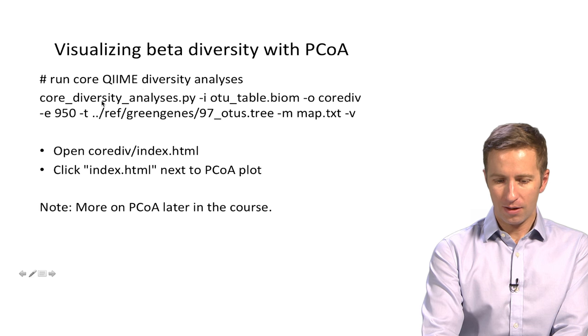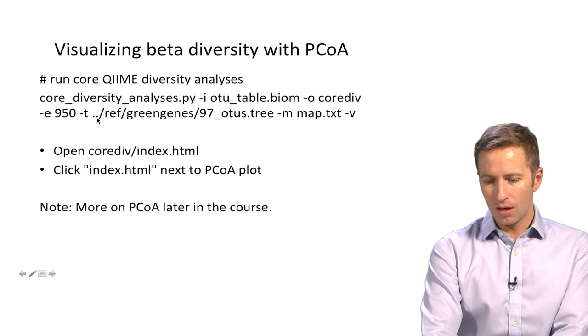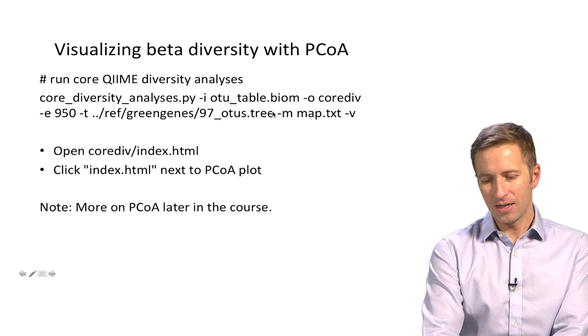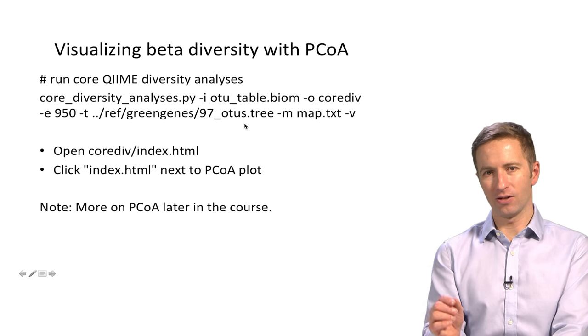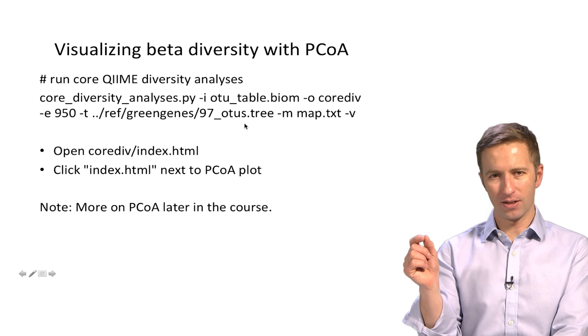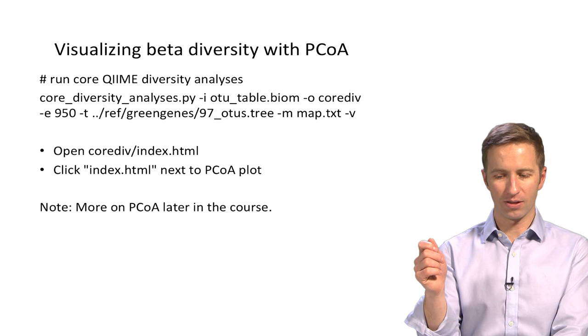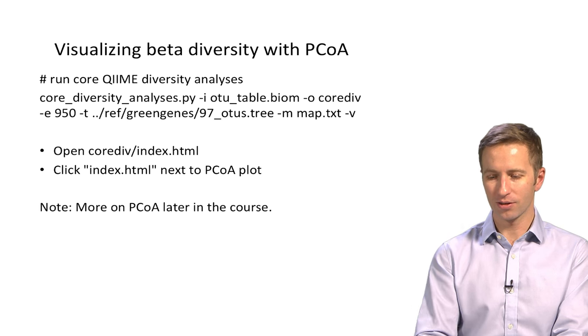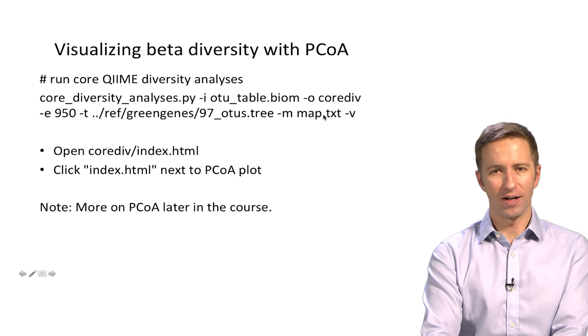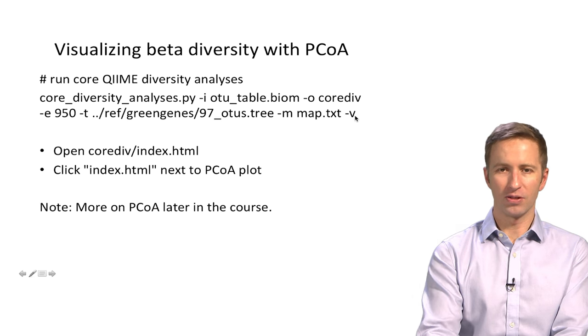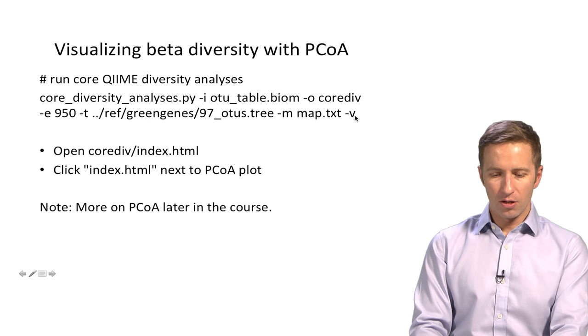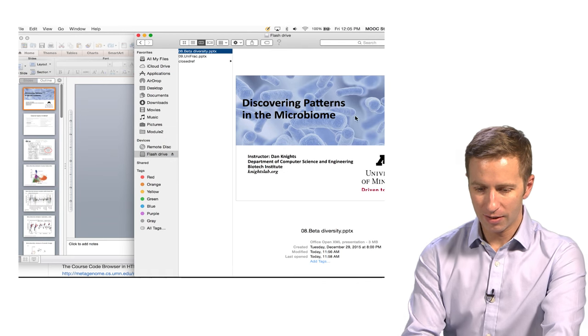So this is 950 sequences per sample. You have to pass in a phylogeny that tells how the different OTUs are related to one another, and that's so it can calculate some phylogenetic diversity metrics. And then you have to give it a mapping file. The dash v just tells it to be verbose and print out lots of output.